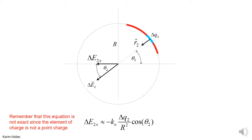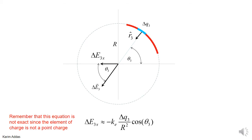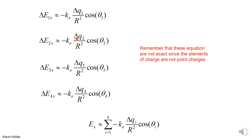We can do the same thing for delta E2x, delta E3x, and delta E4x. To find the total electric field in the x-direction, you add all four parts. This looks like a summation from 1 to 4 of minus K_E times delta Q_i over R squared times cosine theta. But we cannot cut the arc into just four parts, because those arc segments are not point charges — we cannot use Coulomb's law that way. This is just to illustrate the idea.